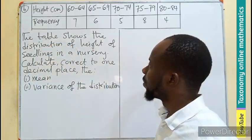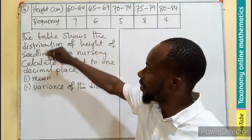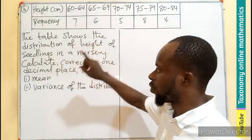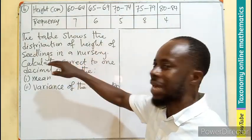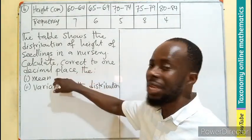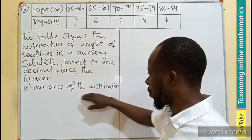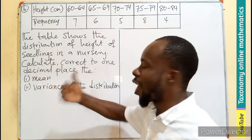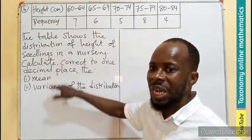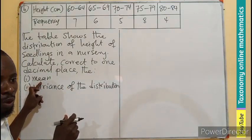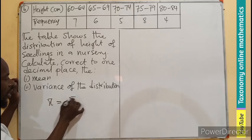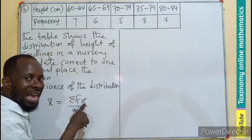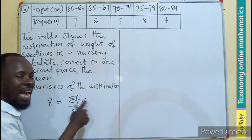Question D of the same question. The table shows the distribution of height of seedlings in a nursery. We have to calculate correct to one decimal place the mean of this distribution and the variance of this distribution. This means that we are going to draw a table of data.